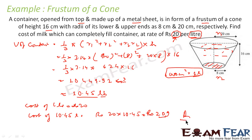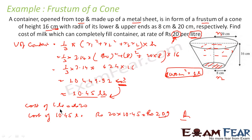Total cost = ₹209. So the cost of milk that can be filled in this container is ₹209. The key steps were: find the volume of the frustum, convert from cm³ to liters by dividing by 1000, then multiply by the cost per liter of ₹20.